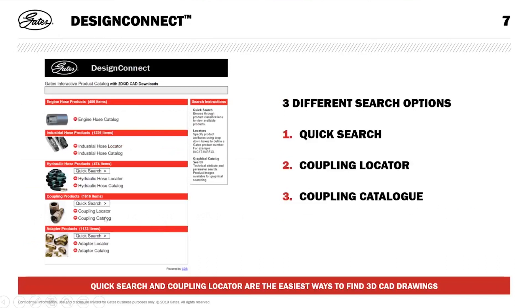There are three options to select your correct 3D model, and all three result in the same 3D model — they are just different ways of searching. The first is a Quick Search option, the second is a Coupling Locator, and the third is a Coupling Catalog. I'm only going to talk about the first two because they are the easiest way to search, while the third is more complicated.